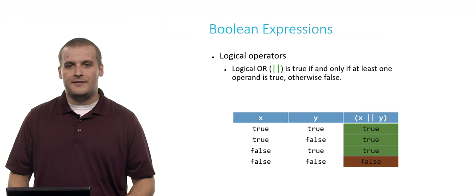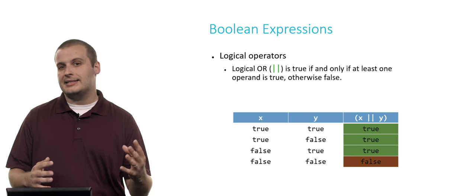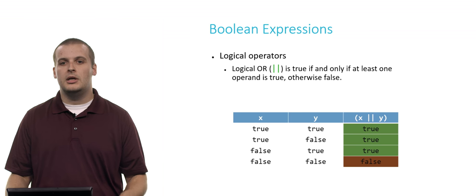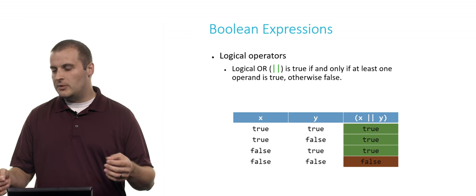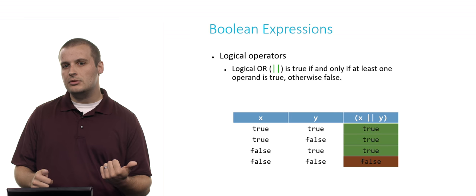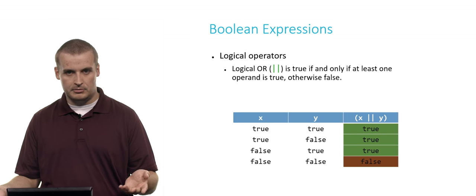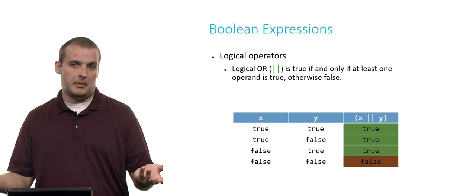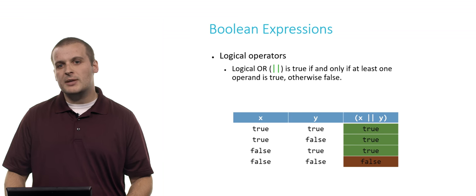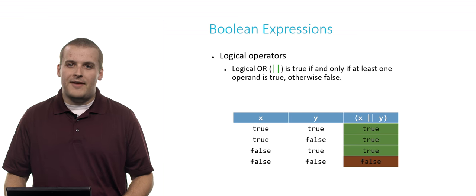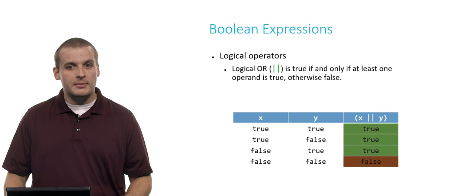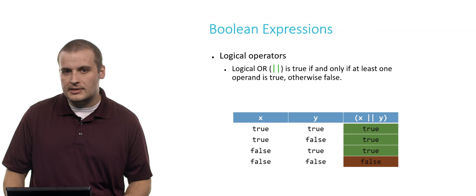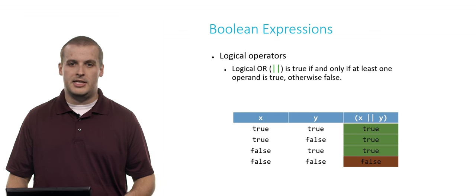Logical or is true if and only if at least one operand is true, otherwise false. So logical and required both x and y to be true. Logical or requires x to be true or y to be true or both x and y to be true. We kind of find ourselves in a situation where we've reached a fork in the road. And we want to go down a particular path if x is true or if y is true. If x is true and y is true, we'll go down that path. If x is true and y is false, one of them is still true. If x is false and y is true, one of them is still true. Only if x is false and y is false do we not go down that path, because neither x nor y is true.